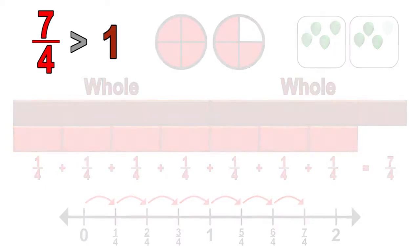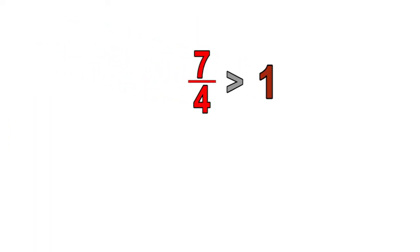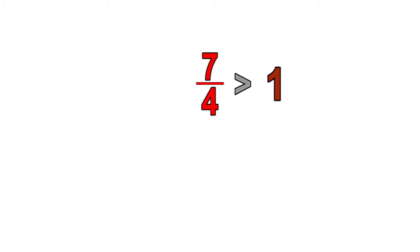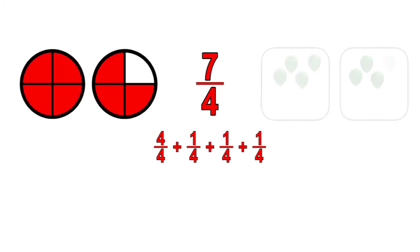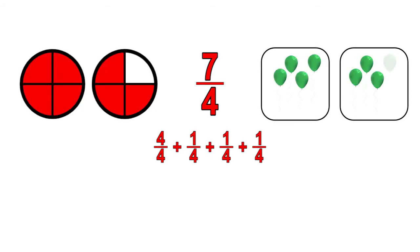With fractions larger than one whole, students may begin to recognize a shortcut to decomposing the fraction into the whole fraction and the unit fractions. For example, seven-fourths can be decomposed to become four-fourths and three one-fourth sized pieces, as visualized with the area and set models. This shortcut will benefit students in future lessons, as they learn to decompose fractions for easier addition and subtraction of fractions.